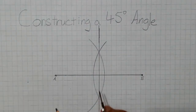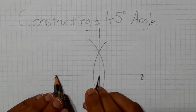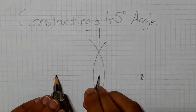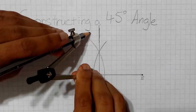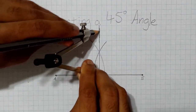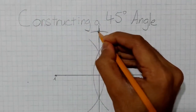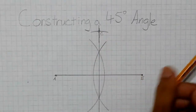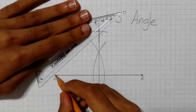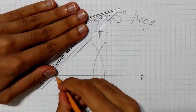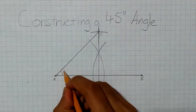Place the tip of the compass on the center of the line segment and measure the distance between the center and point A. Then move the compass to this line and draw an arc intersecting the line, and label this point C. Then using the straight edge, we can connect points A and C to form a 45 degree angle.